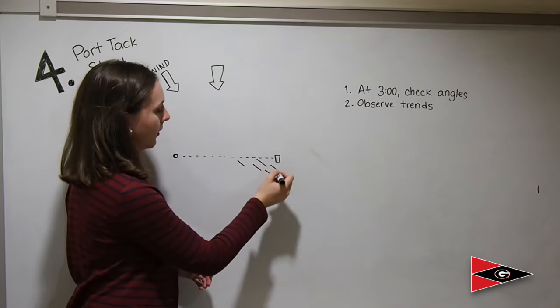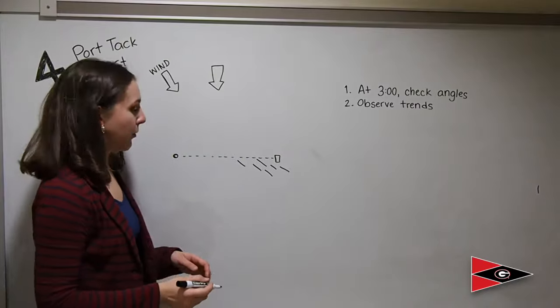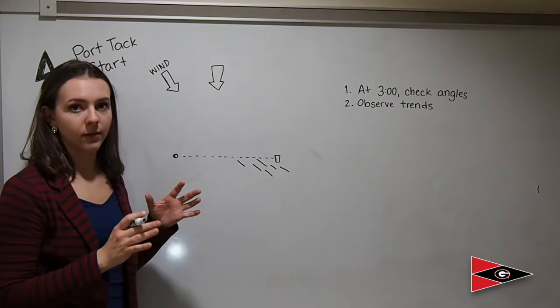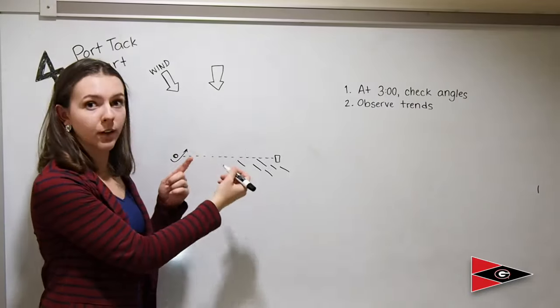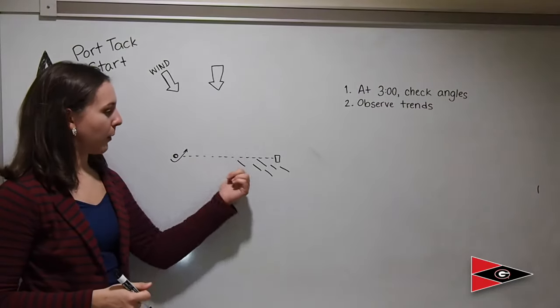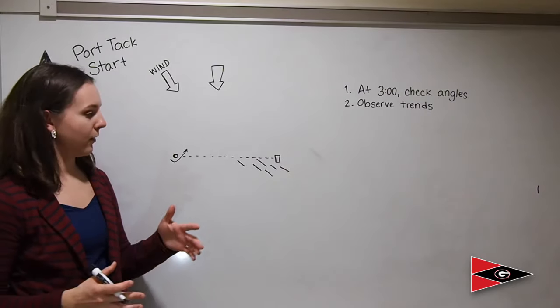But if everyone seems to be starting on the starboard side of the line, and if they're starting at the boat, then you have a pretty good shot if your angles are favorable to do a port tack start because you have time to get in front of them. Having the extra runway right here is also good if you happen to have misjudged your angles. If you thought you could get in front of this boat but you can't and now you need to tack off, you have time to do that safely.